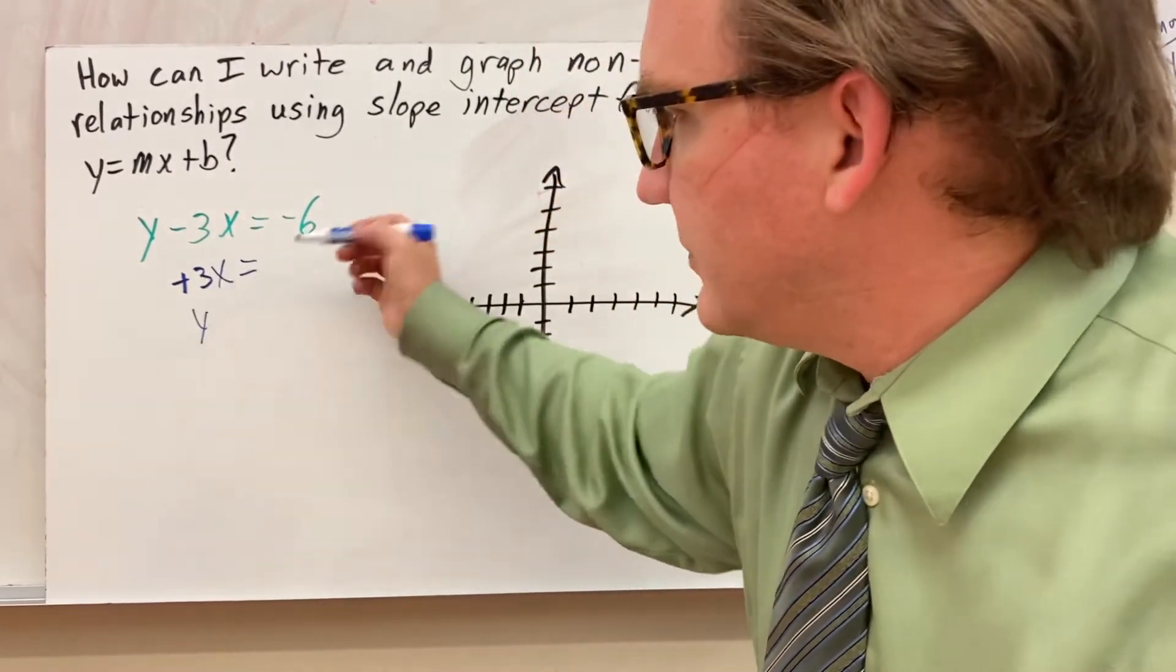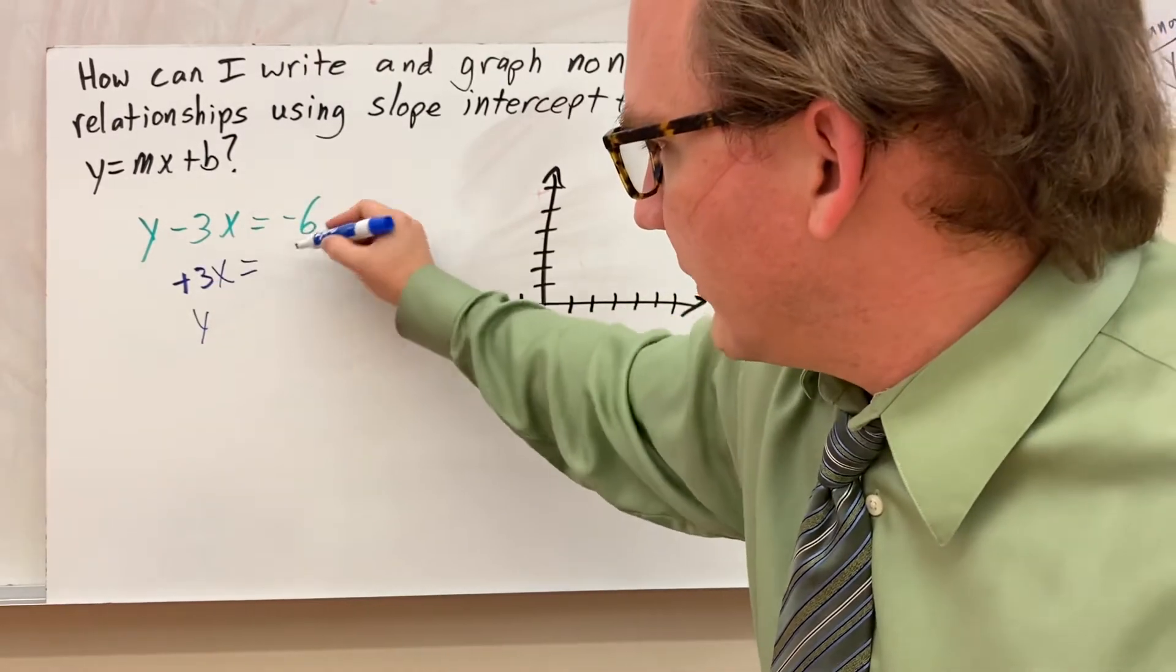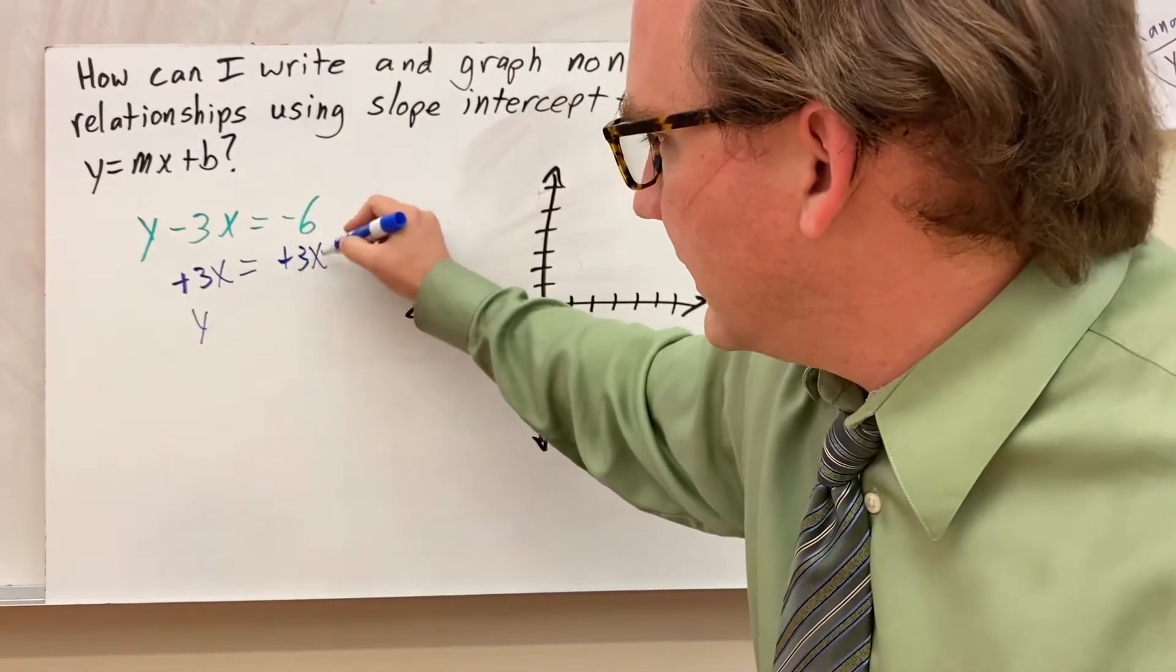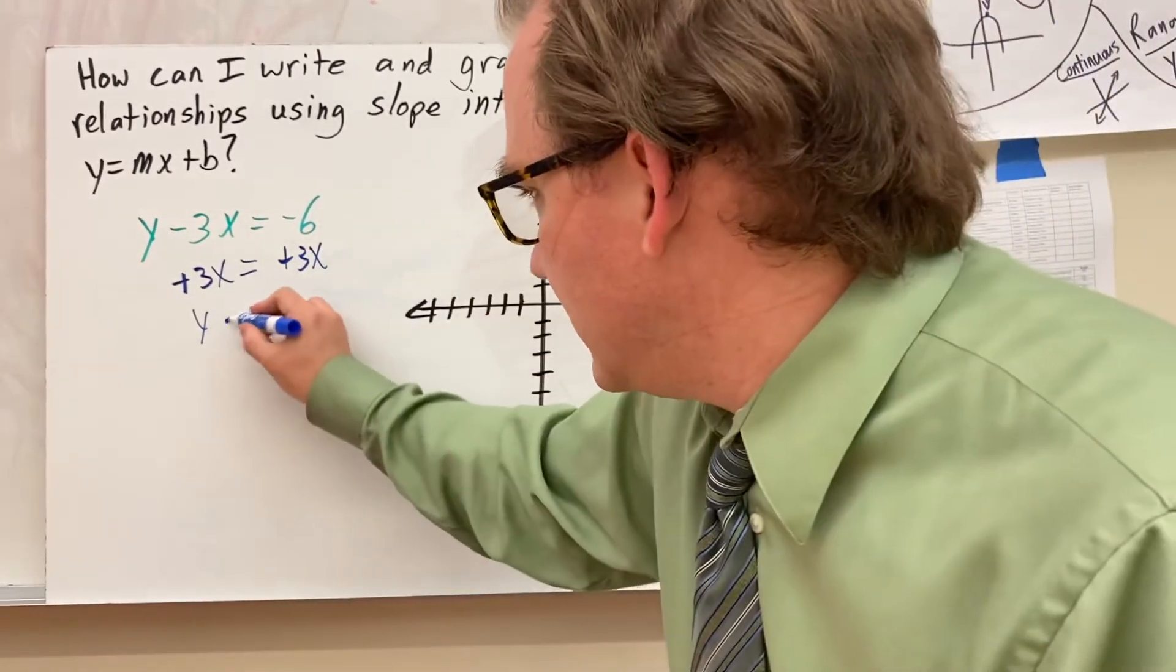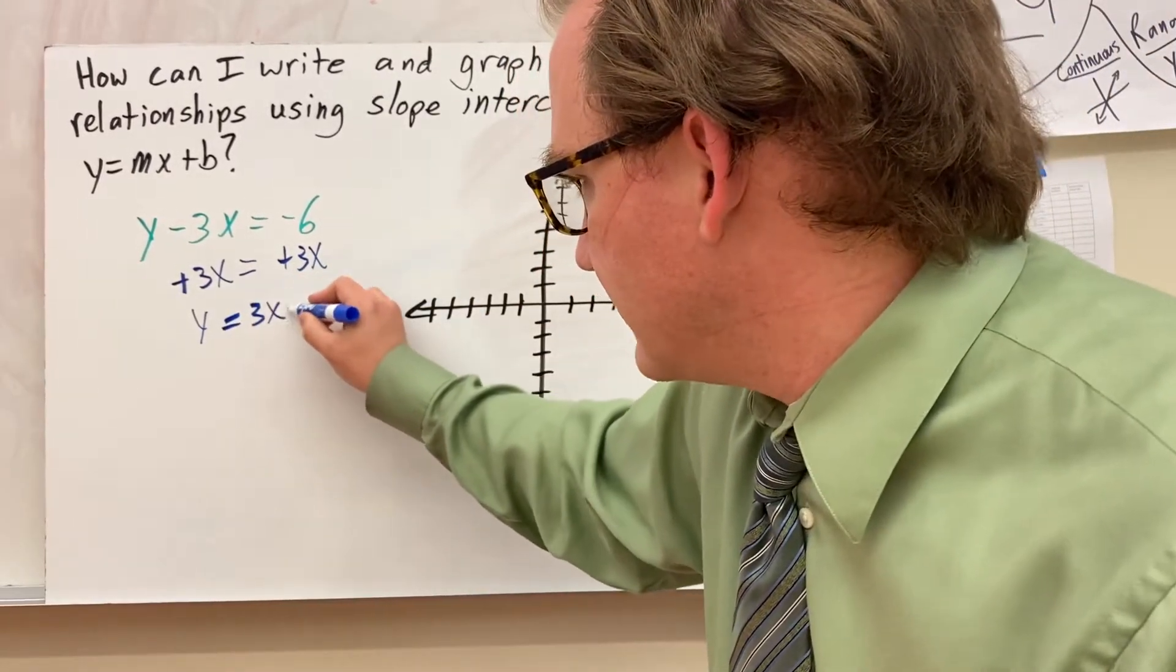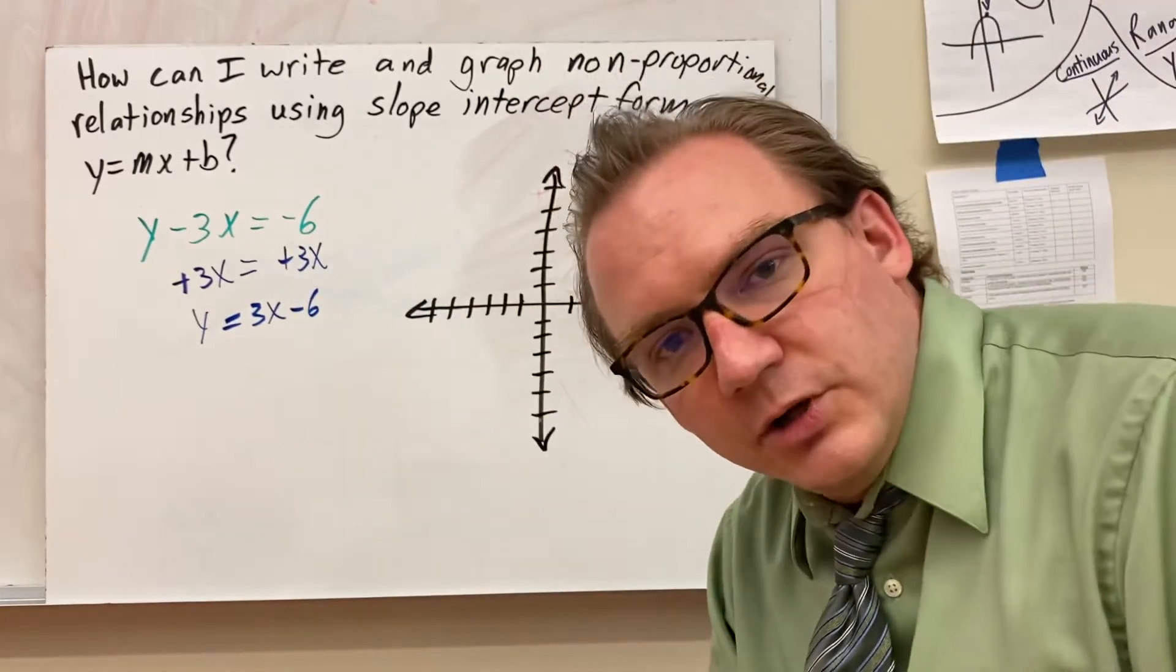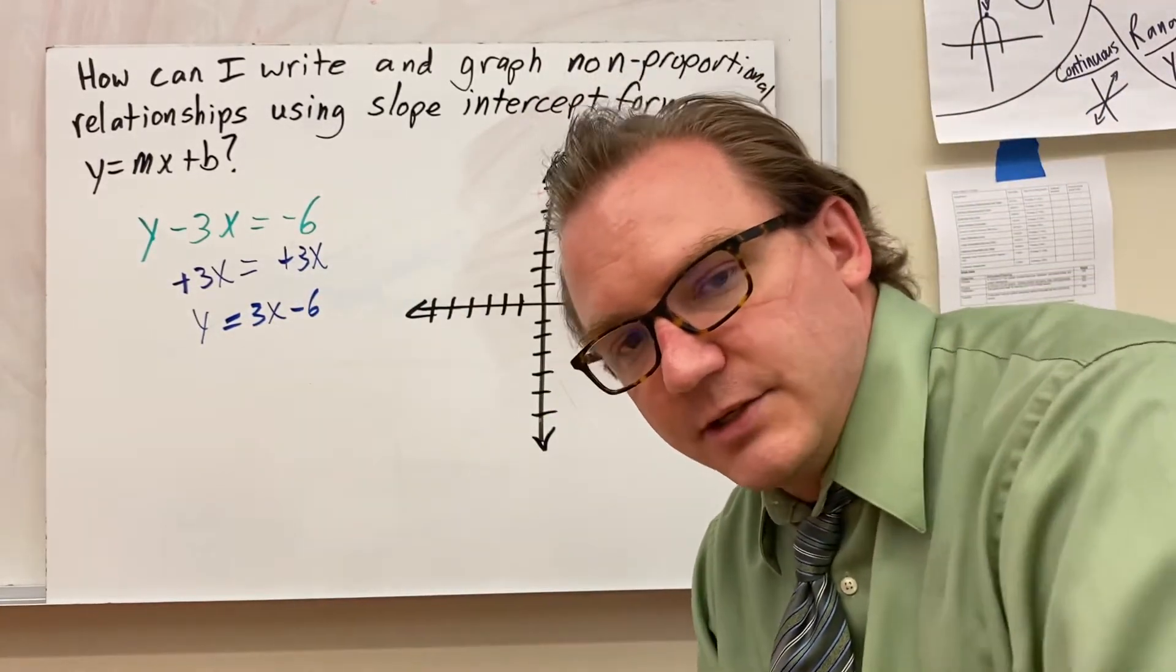But I have to do the same thing to both sides. If I add 3x here, I need to add 3x to this side. So 3x and negative 6 is really just the same as saying 3x minus 6. You can't combine those. They're not similar terms. You have an x term and a constant term.